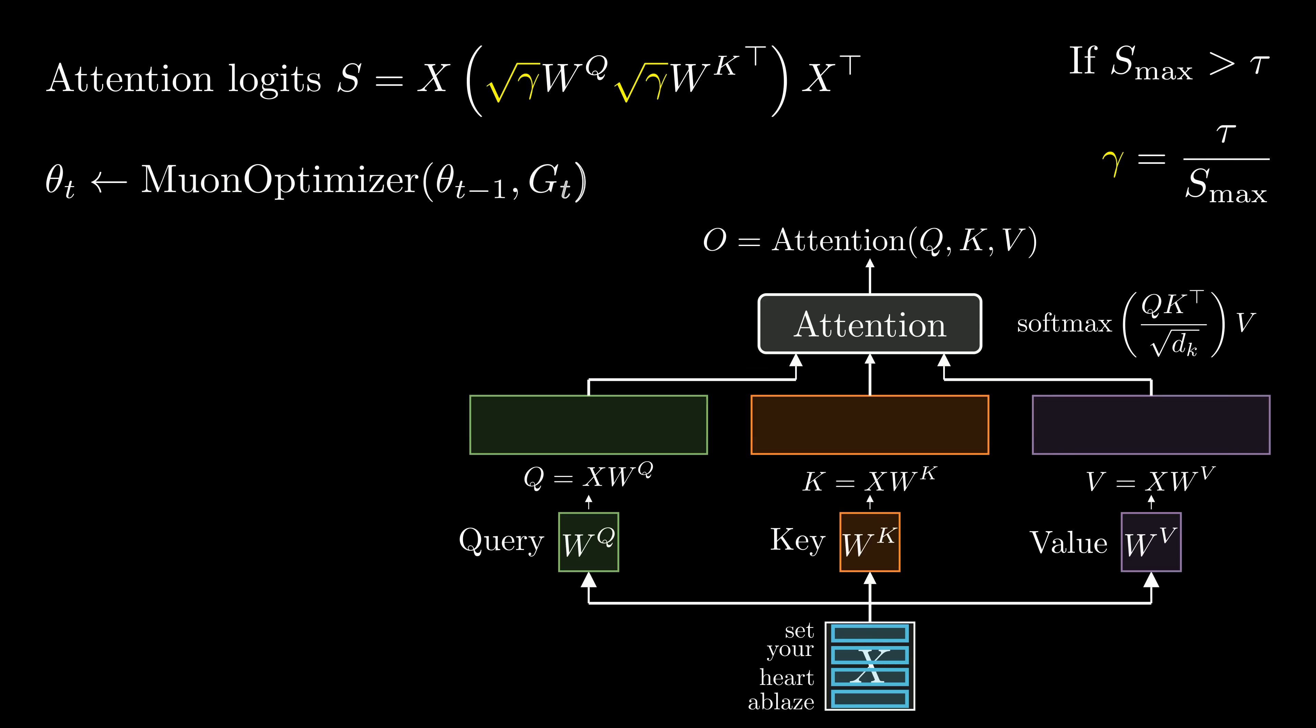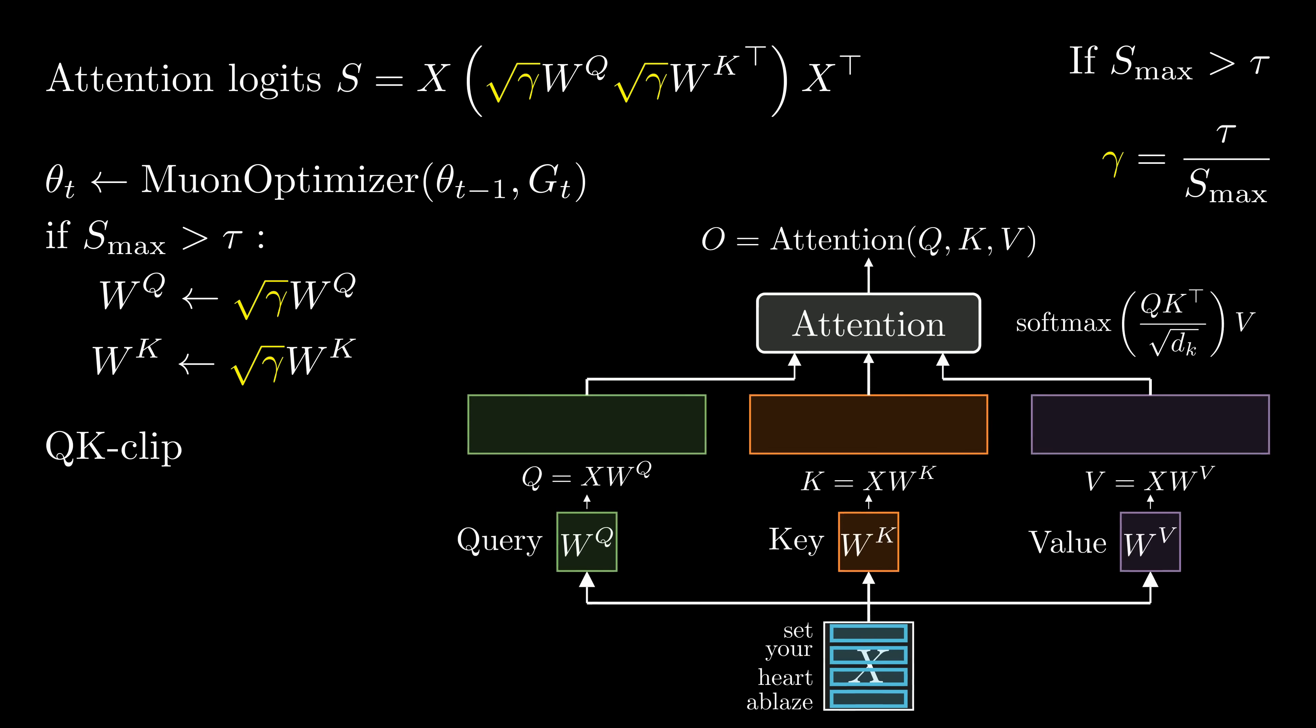The revised algorithm looks like this. First, we update the model parameters theta using muon optimizer. Next, if the maximal attention logits is larger than tau, we rescale both wq and wk by multiplying them with the square root of gamma. This trick is called qk-clip. By doing so, we directly constrain attention logits, ensuring that they stay within a safe range by rescaling the query and key projection weights.